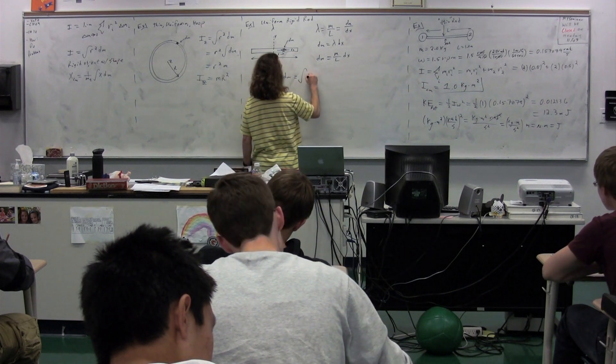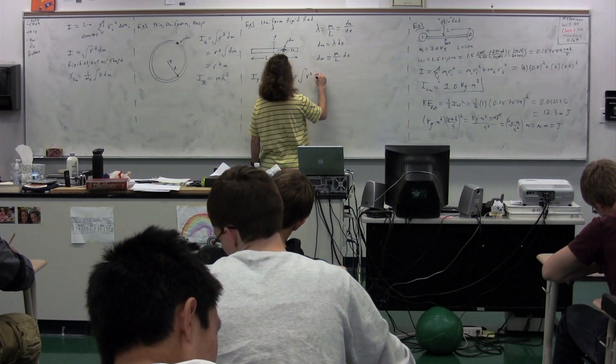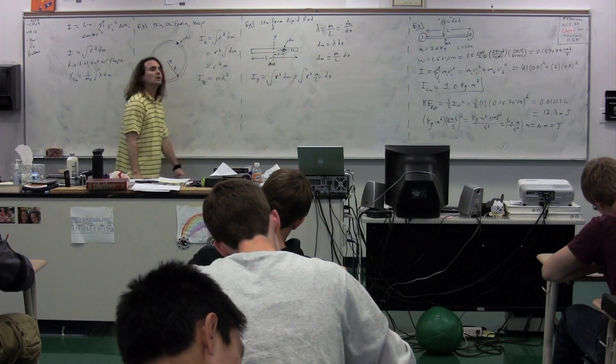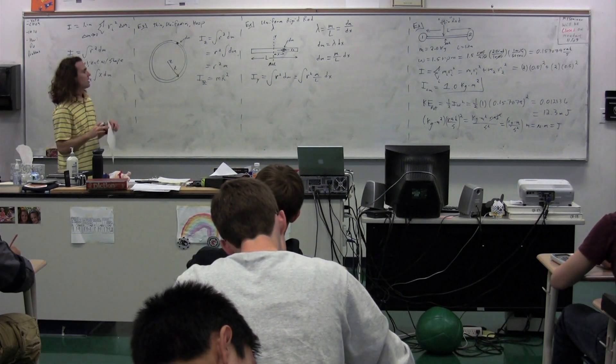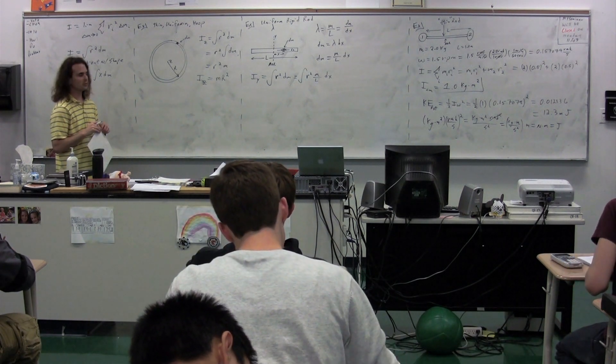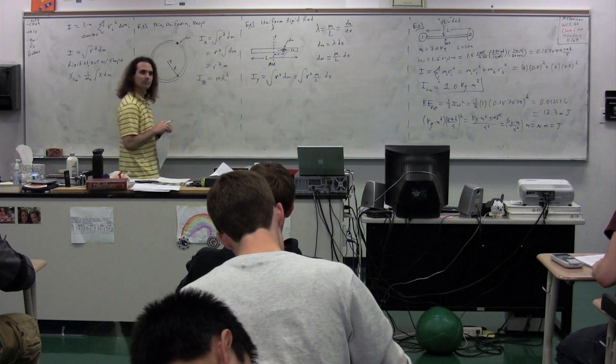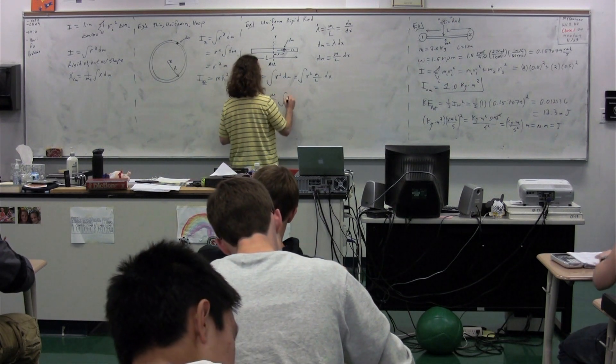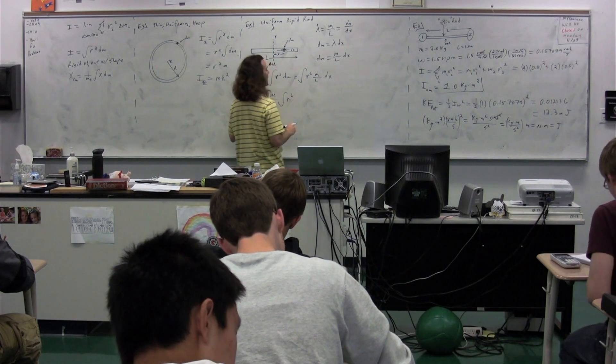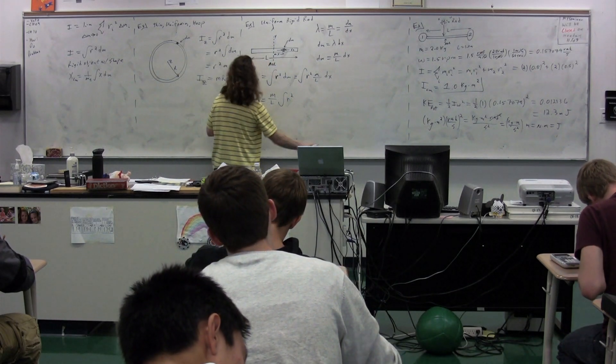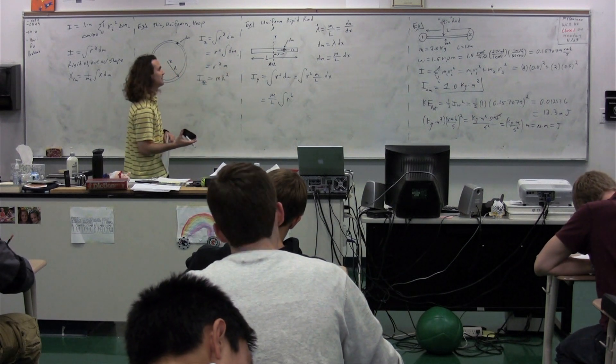We get the integral of r squared times mass over length with respect to x. What are constants underneath the integral that we can take out? Sarah Jane? The mass and the length. Mass and the length. So we have mass per unit length integral of r squared. And actually, we can change from r to x, because the position we're talking about here is in the x direction, rather than just a generic r.